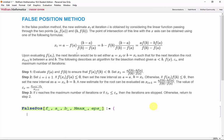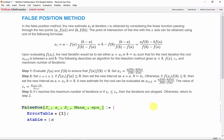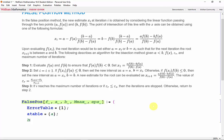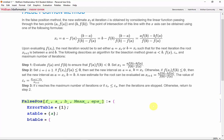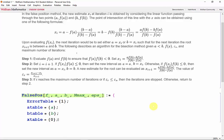So once again, we need to set up our first iteration outside of the while loop. ErrorTable will be set equal to 1, atable will be set to a, btable will be set to b, and xtable will be set to 0 as a placeholder.